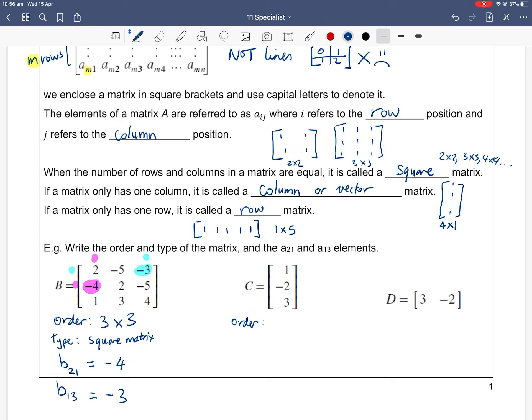Let's do C. Order, row by column. There are 3 rows and 1 column, so it's a 3 by 1. What type of matrix is it? It's a pure column, only one column, so it's called a column matrix, or you can call it a column vector. We want element 2, 1. Row 2, column 1, that's just negative 2. And we want element 1, 3. Row 1, column 3. But there is no column 3. So in this case, it's non-applicable because there is no column 3. There is no such entry as 1, 3.